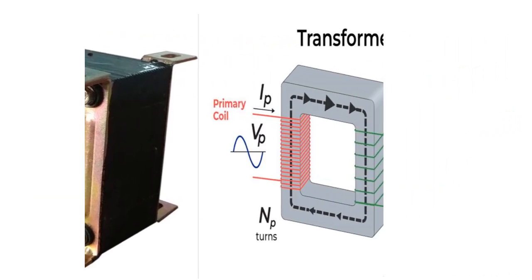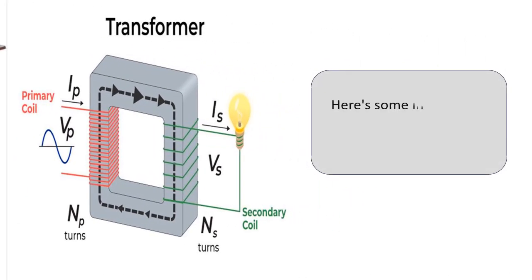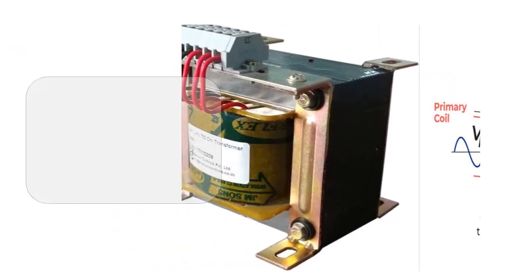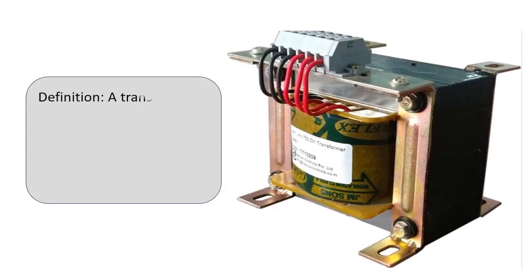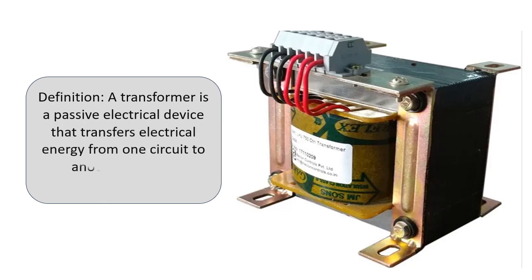Here is some information about transformers in Class 12 physics. Definition: A transformer is a passive electrical device that transfers electrical energy from one circuit to another through electromagnetic induction.